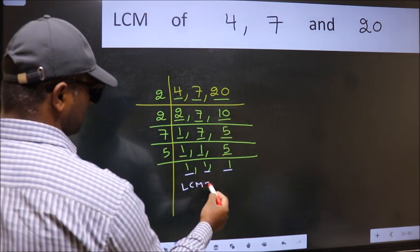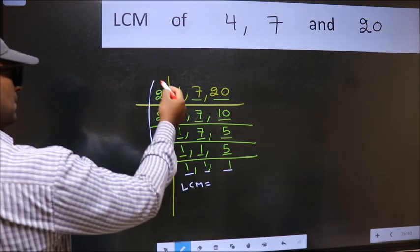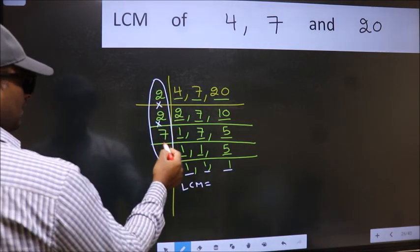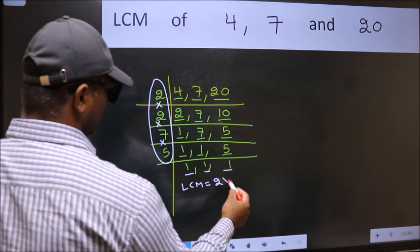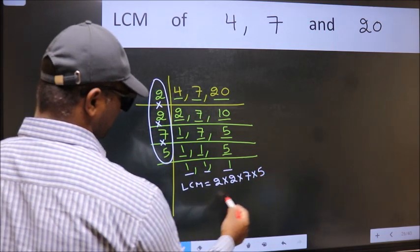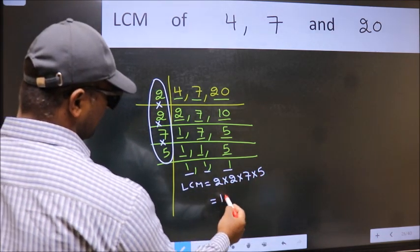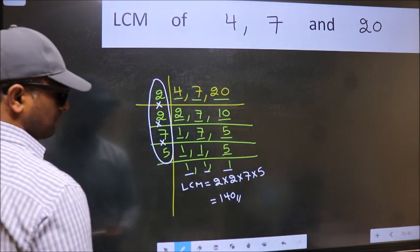So our LCM is the product of these numbers. That is 2 times 2 times 7 times 5. When we multiply these numbers, we get 140 as our LCM.